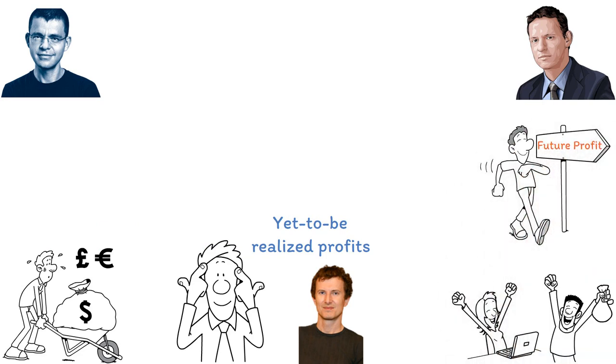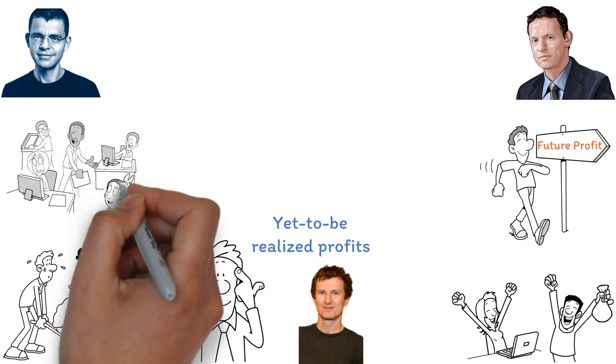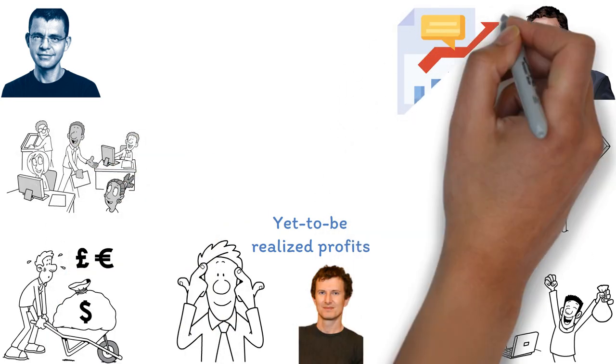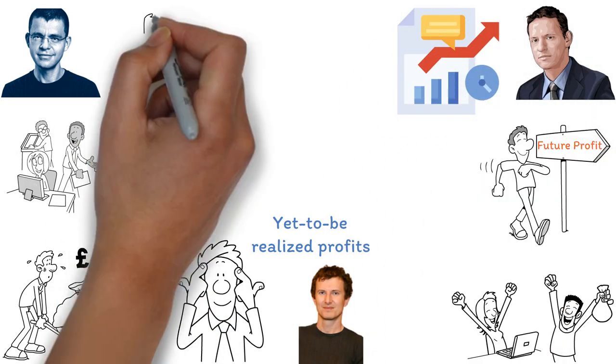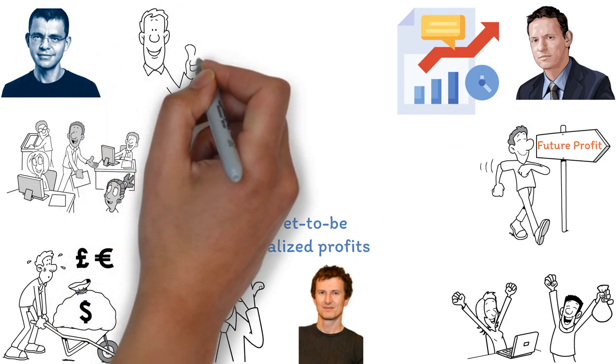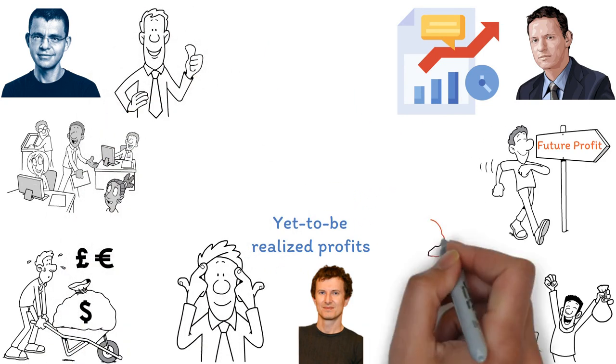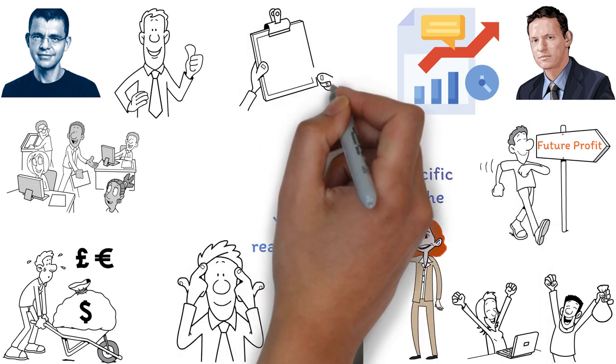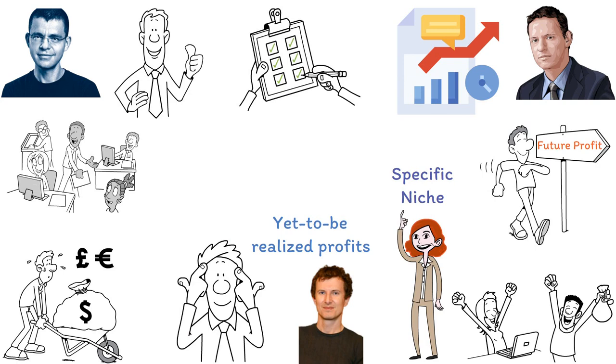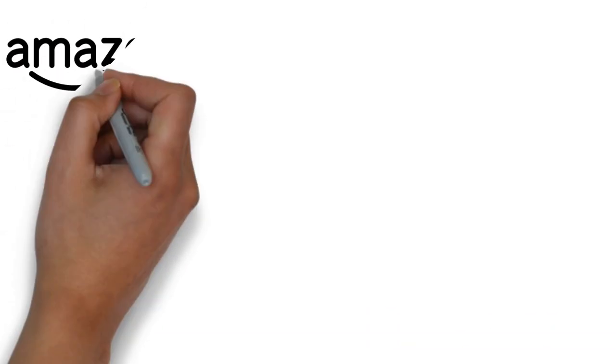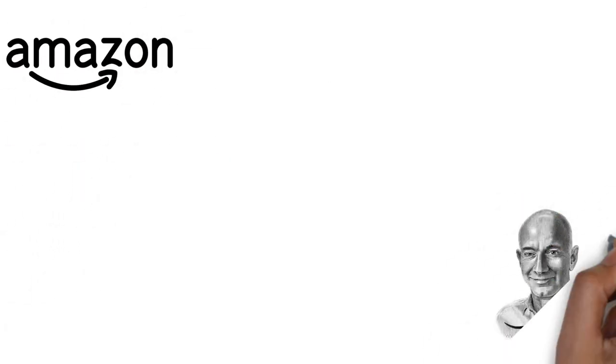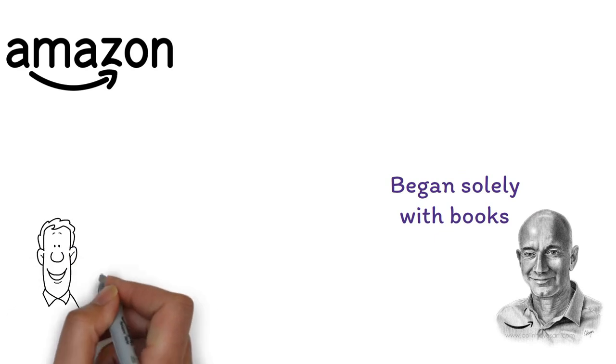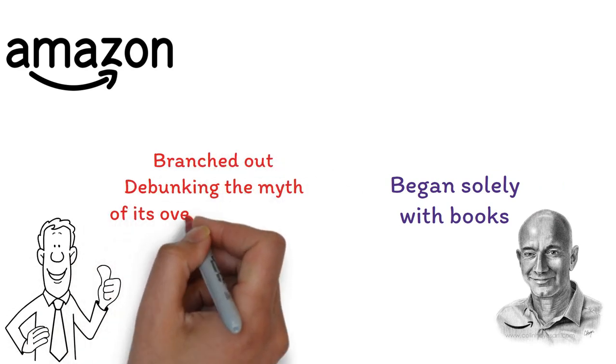For startup founders, immediate dominance isn't the norm. Long-term commitment is essential. Starting small and expanding gradually is often the wisest approach. It's not about excelling in every domain, but in your specific niche. Define your market precisely. Dominate it, then expand. Amazon is a prime example. Jeff Bezos' vision was to be the top online retailer, yet he began solely with books. As Amazon dominated that niche, it branched out, debunking the myth of its overnight success.